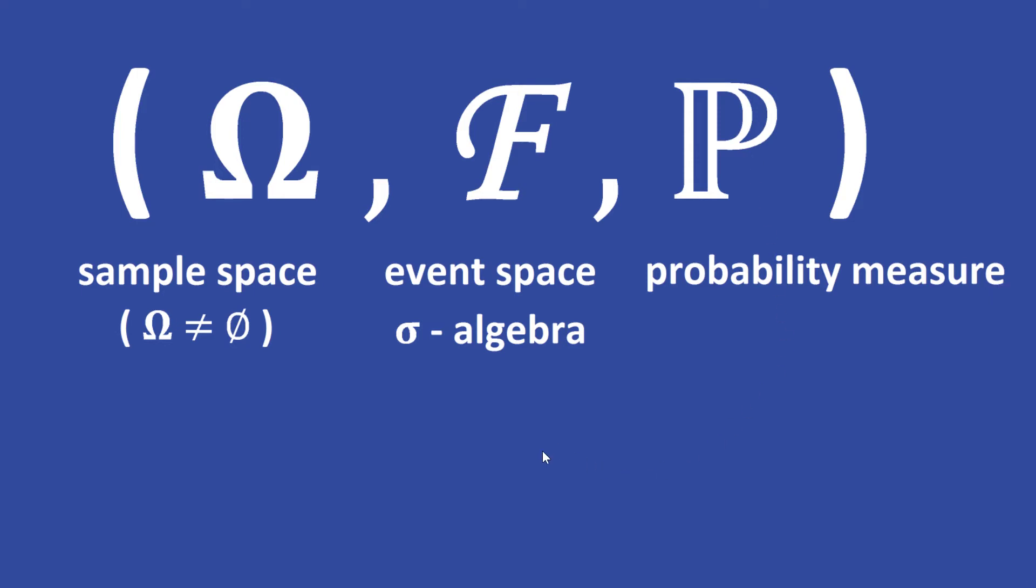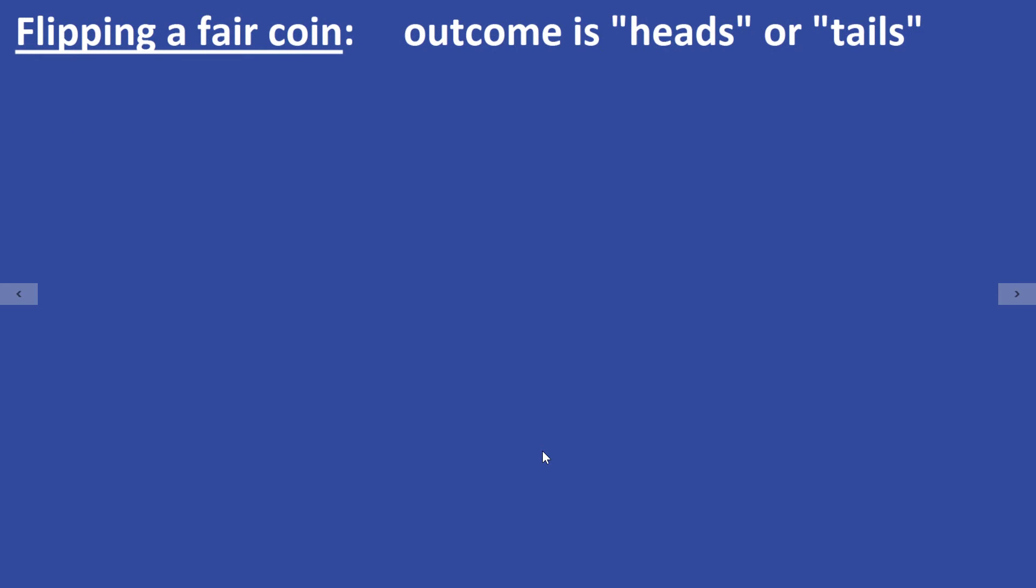Let's take a look at an easy example of a probability space. Let's say the experiment consists of just one flip of a fair coin. Then the outcome is either heads or tails.